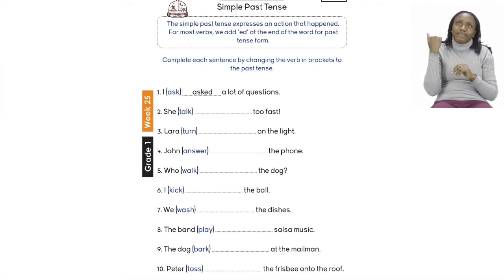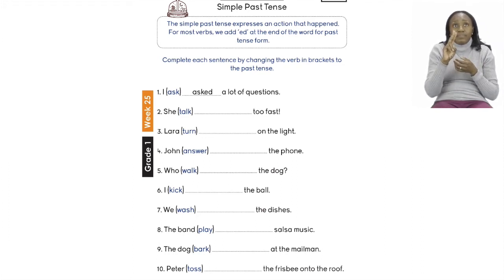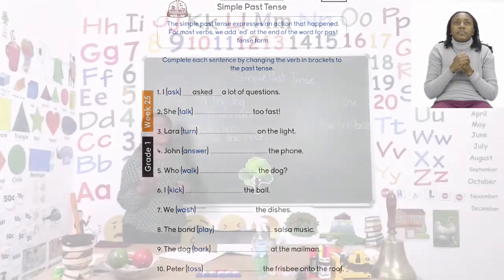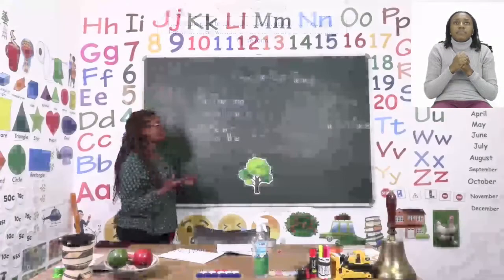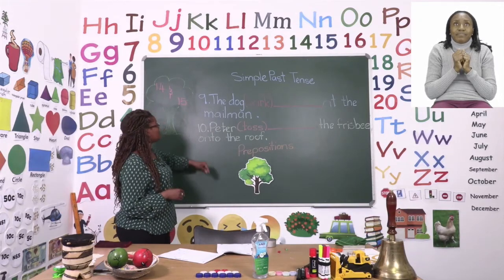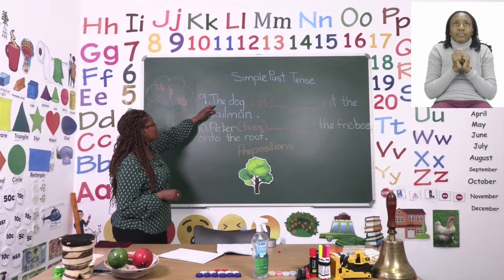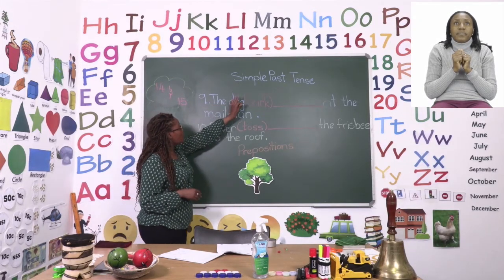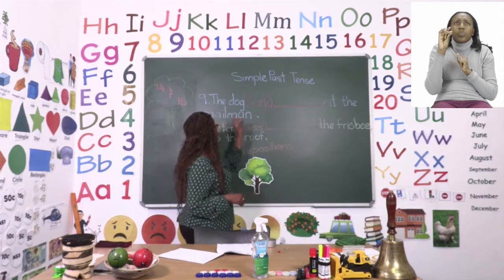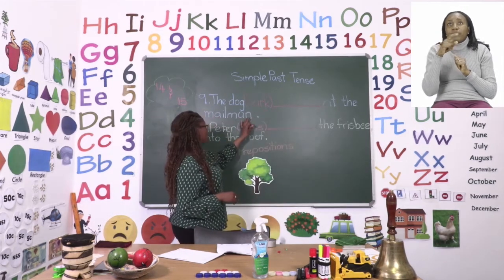So we are going to do two together — number 9 and number 10. Let's take a look. I have written them already on the board and we are going to work them out together. Number 9: the dog bark at the mailman.